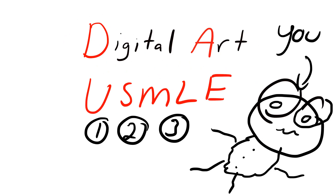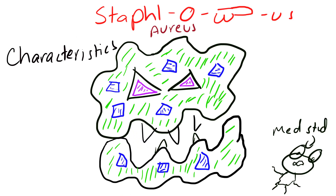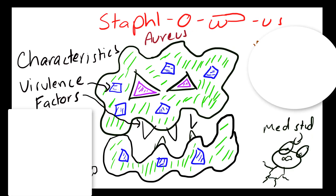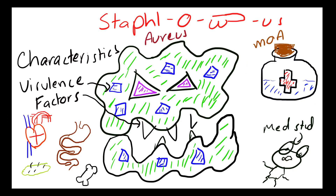Welcome to Digital Arts USMLE. We're going to start off by covering some microbiology, beginning with Staph aureus, just because it's pretty simple. We're going to cover its characteristics, the virulence factors, the organ systems affected by it, and the treatment options based on the type of infection. We'll also cover some of the mechanisms of action for antibiotics we can use against it.